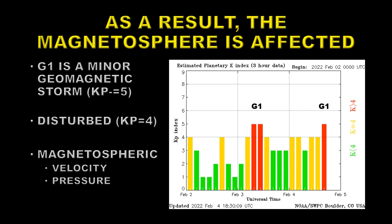Here is the updated geomagnetic index, the Kp index. You can see we're just into the latest G1 storm. A G1 storm is a minor geomagnetic storm, but there's nothing saying that this will not intensify in the next few hours. A lot of this time has been disturbed at Kp equals 4 — that sort of orangey-yellow color.